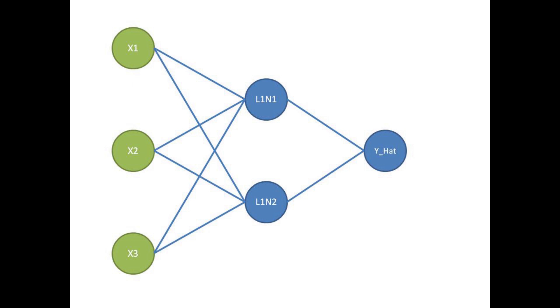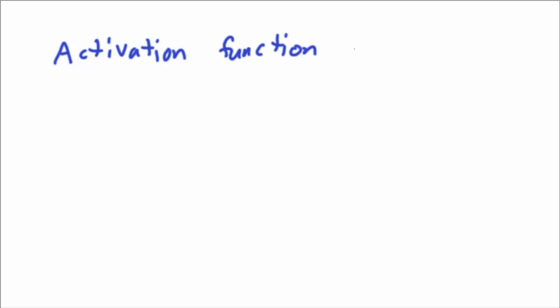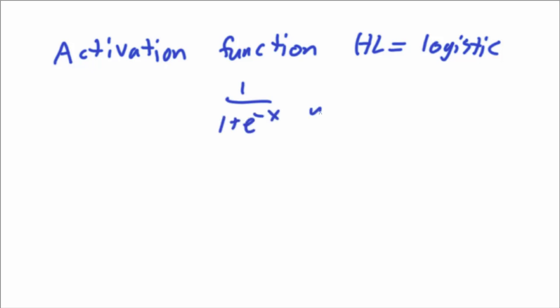From this example here, you can see that we're going to have three inputs: x1, x2, and x3. We're going to have two neurons in our hidden layer — layer 1 neuron 1, which is going to be activated, and layer 1 neuron 2, which is going to be activated. Then we're going to calculate out y-hat, which is our final prediction. The activation function for the hidden layer is going to be logistic. Logistic is just 1 over 1 plus e to the negative x, where x is your linear equation.